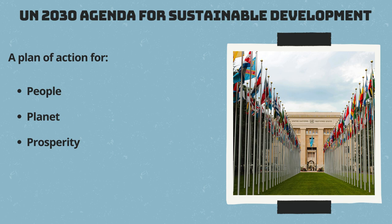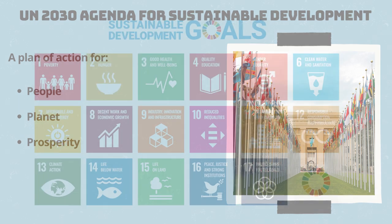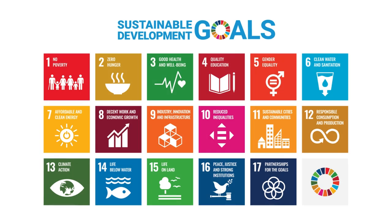The Agenda 2030 comprises 17 sustainable development goals aimed at addressing various global challenges including poverty, inequality, climate change, environmental degradation, peace, and justice. The Green Deal stems directly from the desire to implement these sustainable development goals within the European Union, but sets even more ambitious goals.